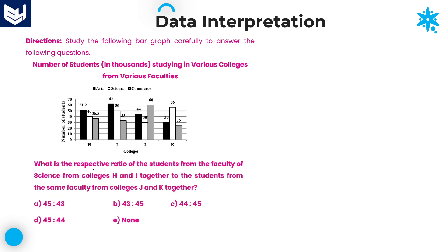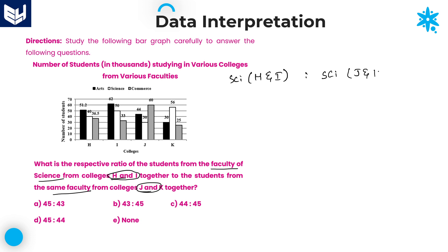Next question: What is the respective ratio of students from the faculty of science from colleges H and I together, to those from the same faculty from colleges J and K together?